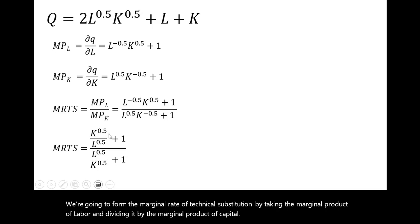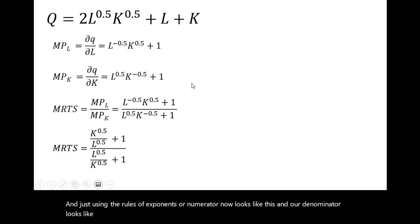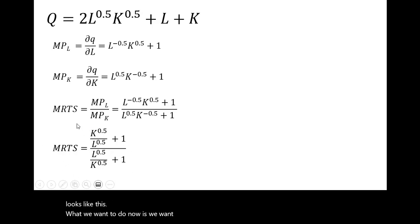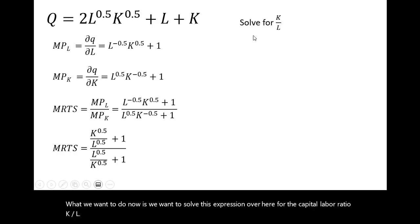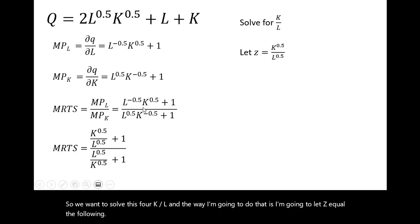And just using the rules of exponents, our numerator now looks like this and our denominator looks like this. What we want to do now is we want to solve this expression over here for the capital labor ratio, k divided by l. So we want to solve this for k divided by l. And the way I'm going to do that is I'm going to let z equal the following.